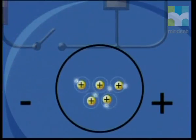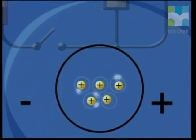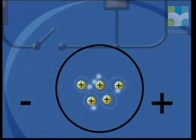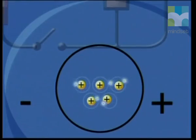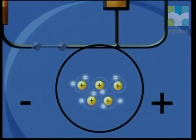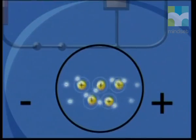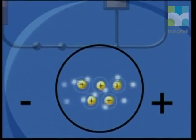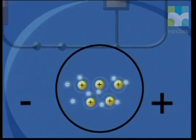Here you can see there is what we call a sea of delocalized electrons in the metal conductor. These electrons are free to move between the atoms. When a circuit is completed and there is a potential difference, the negative electrons in the circuit are attracted to the positive end of the battery, and the charge moves around the circuit. This flow of charge is current.